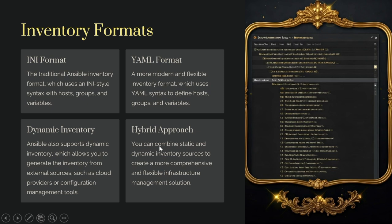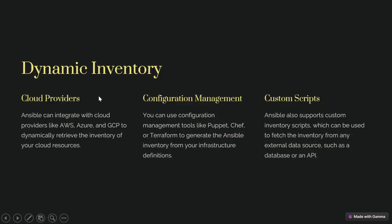We can combine static and dynamic inventory sources to create a more complex and flexible infrastructure management solution. We can connect to dynamic models in the catalog to integrate external sources, and then retrieve configuration from those dynamic models. Dynamic inventory also allows us to connect with cloud providers like AWS, GCP, and others, and retrieve inventory from those dynamic models.